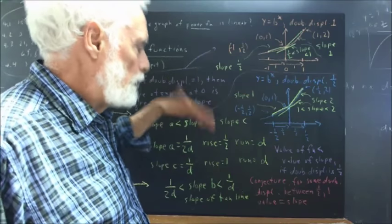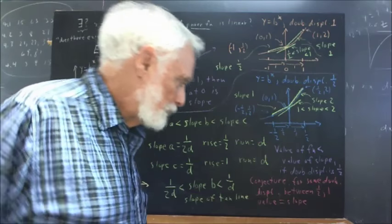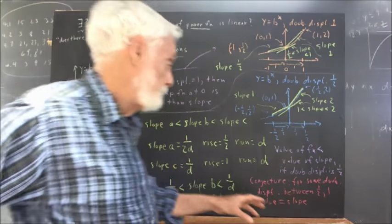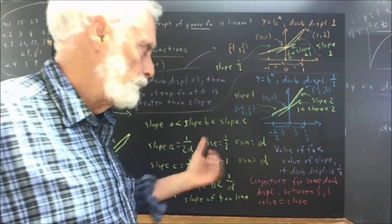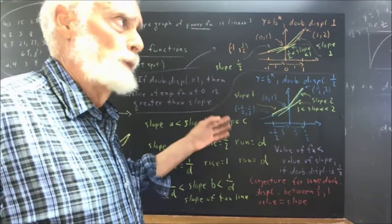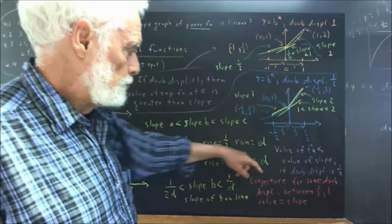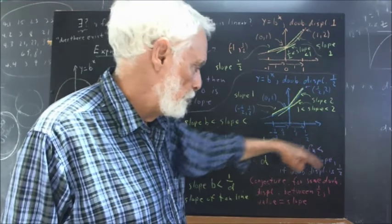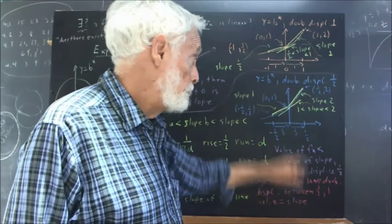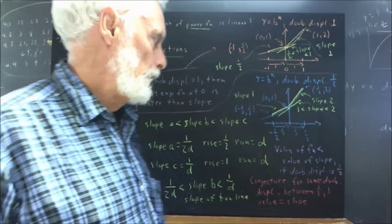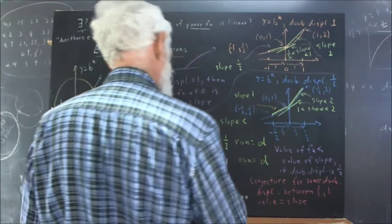And once we've established that, we can establish that the value is equal to the slope at every point. Okay, now there's a little bit to that argument but it's accessible to you. You'll understand it once we understand how we transform functions and shift them and stretch them and so forth, something you should understand at this point but it was fuzzy for me when I was at your point, so I expect that it's fuzzy for a lot of you. So the conjecture: for some doubling displacement between one half and one, the value of the exponential function at the y-axis is equal to the slope at the y-axis.